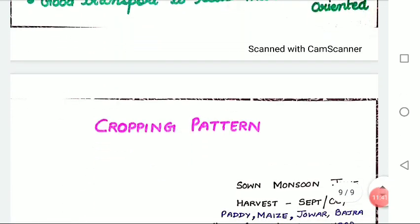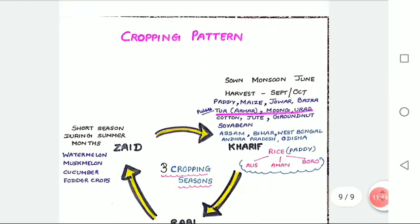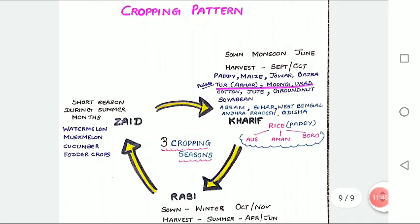Now we are going to discuss the cropping pattern. Basically, we have three cropping seasons in India: Rabi, Kharif and Zaid. You have all studied about these seasons in your previous classes. Let us recall them quickly. Rabi crops are sown in winter from October to December and harvested in summer from April to June.